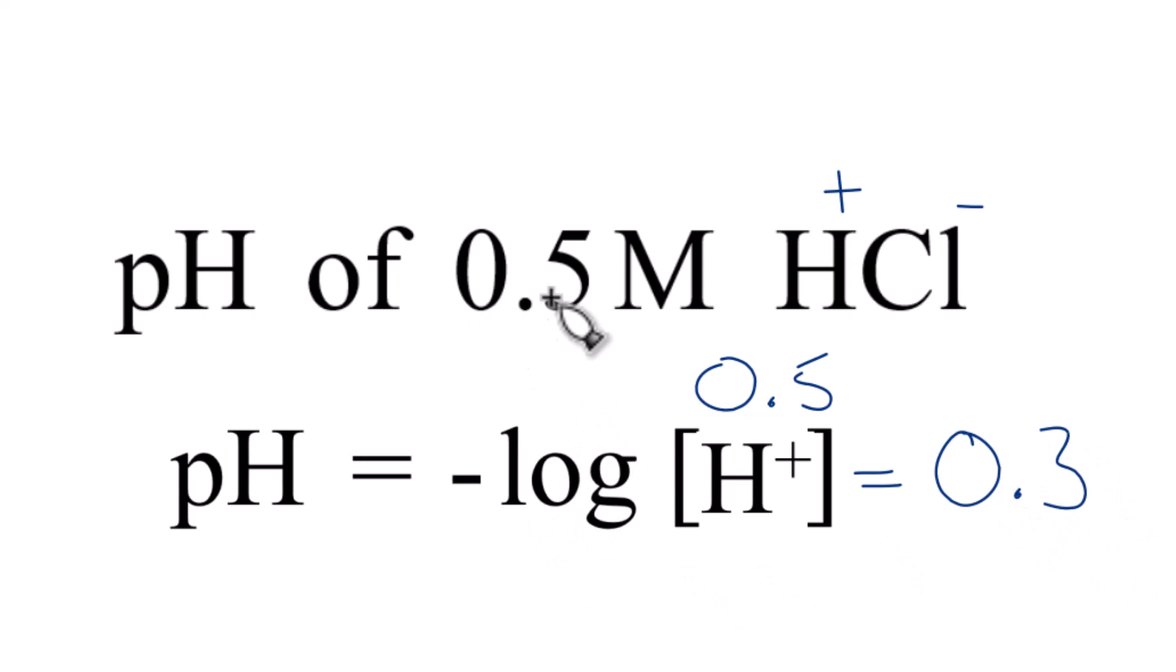So the pH of a 0.5 molar solution of HCl is 0.3. That makes a lot of sense. Hydrochloric acid is a strong acid, dissociates completely, lots of H plus ions, these hydrogen ions. So we would expect it to be below seven since it's an acid.